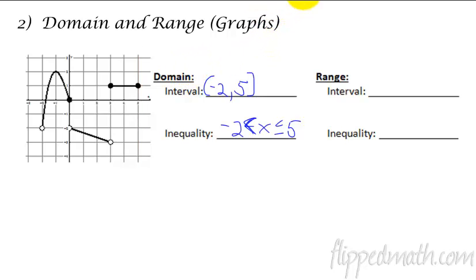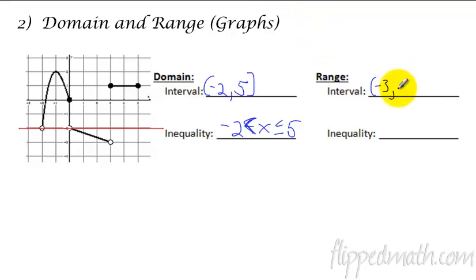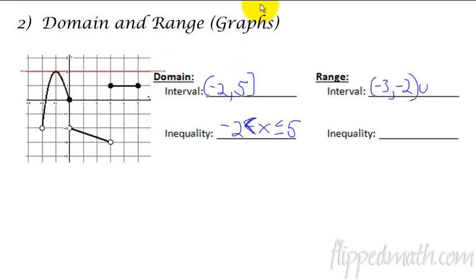Now let's try the range, which is usually where people make mistakes on this one. Let's start at the bottom. It's going to start off here at negative 3 — that's the lowest point, and it is open. So parenthesis, negative 3. Now there is a break in the graph at negative 2, and there is also a graph segment here, but they're both open. So negative 2 should not exist anywhere in the range. I'm going to go from negative 3 to negative 2, union, and then continue up through all these y values until we get to 2. So we go from negative 2 to 2. It's basically everything from negative 3 to 2 except for negative 2.